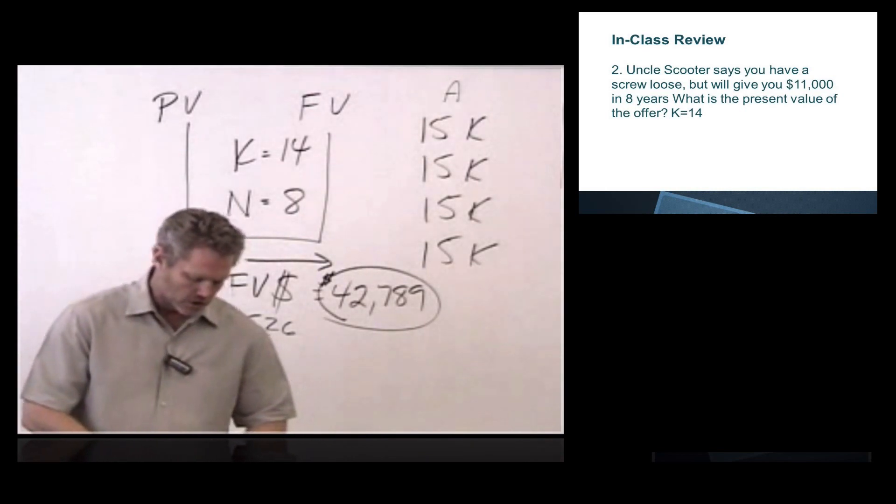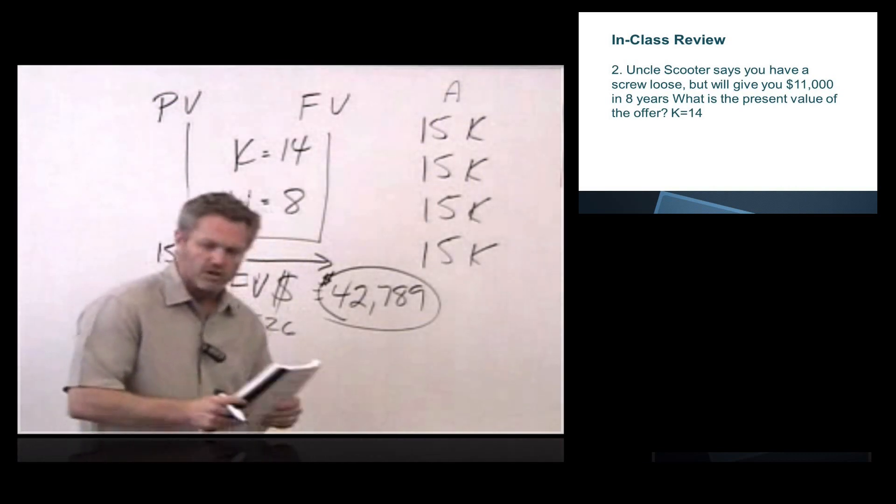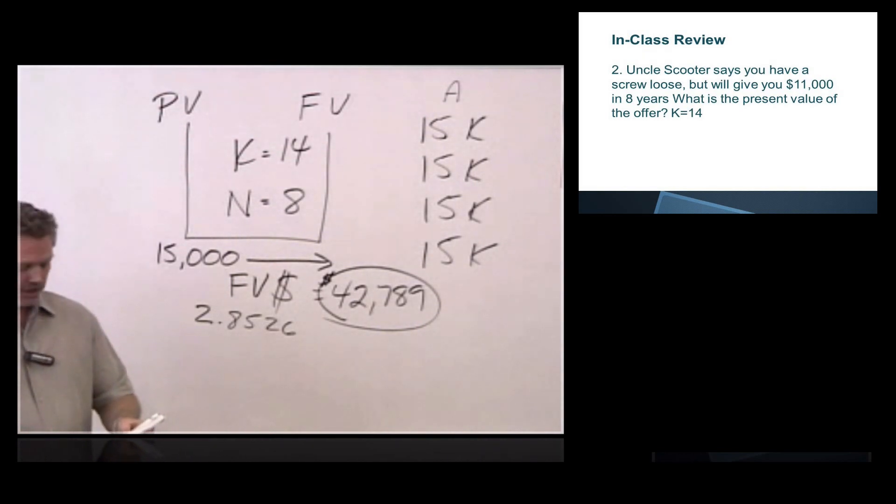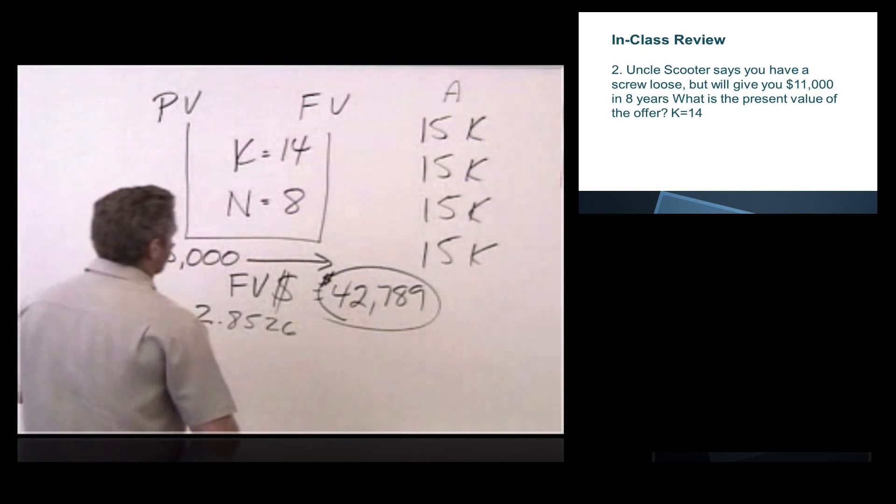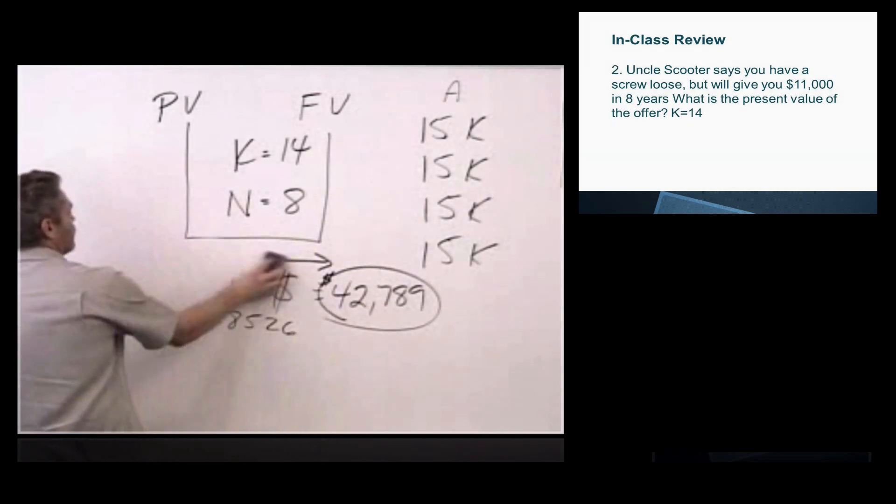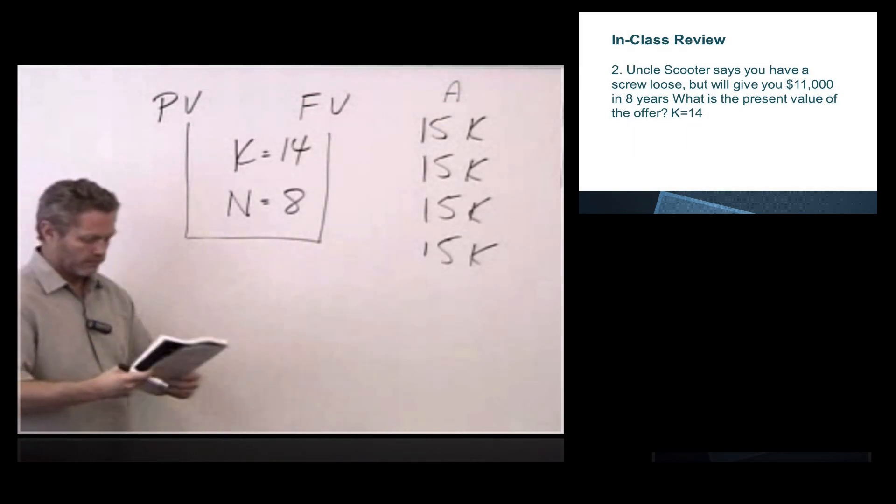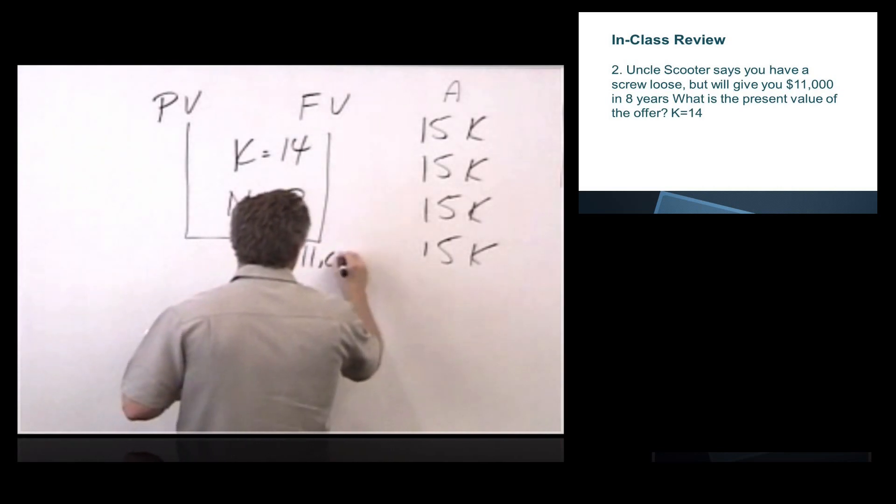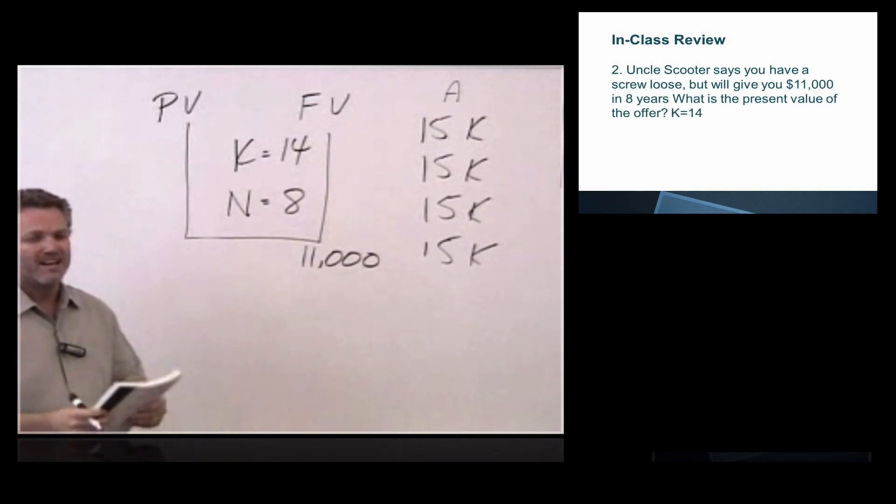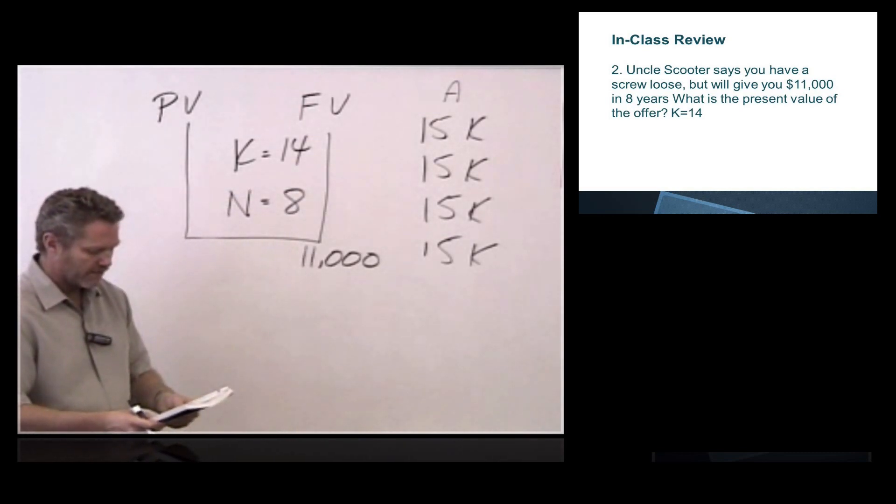Question 2. Uncle Scooter says you have a screw loose, but will give you $11,000 in 8 years. What is the present value of the offer? This is certainly just like family, where family is going to borrow $15,000 and offer you $11,000. We know he wants $15,000, he would have to pay us $42,789. If he's going to give us $11,000 in the future, that's way out here in the future. So $11,000 goes under future value. He's not giving us $11,000 each year, or every year, just one time payment. It's eight years from now, so N is still 8. K is still 14.